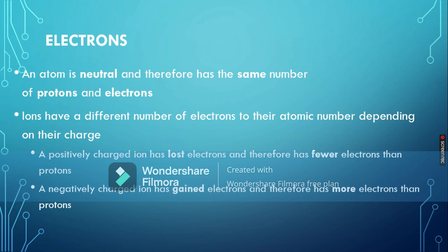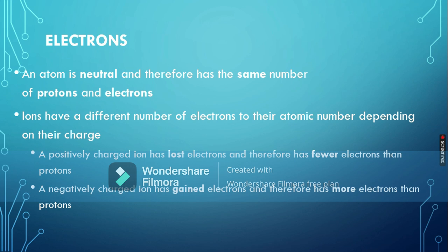Now let's discuss electrons. An atom is neutral because it has equal numbers of positive and negative charges — protons and electrons — which cancel each other out to give overall zero charge. Ions have a different number of electrons compared to their atomic number depending on their charge. A positively charged ion has lost electrons and therefore has fewer electrons than protons. A negatively charged ion has gained electrons and therefore has more electrons than protons.